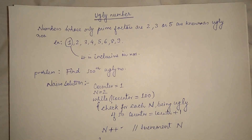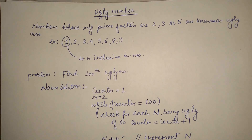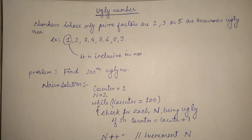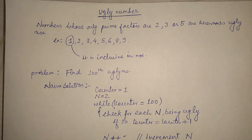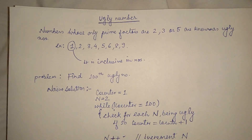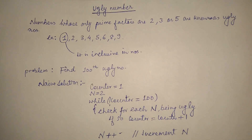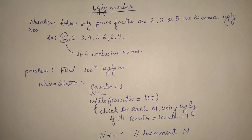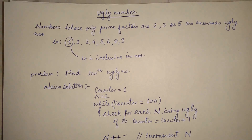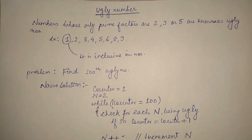Hello friends, my name is Nitesh Raj and today we are going to study one of the dynamic programming problems — the ugly number problem. First of all, we need to know what is an ugly number. Numbers whose only prime factors are 2, 3, or 5 are known as ugly numbers. Here are a few ugly numbers in order: 1, 2, 3, and so on. 1 is inclusive in this ugly number list.